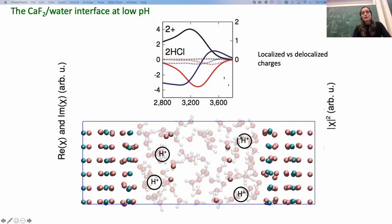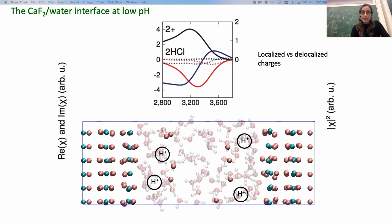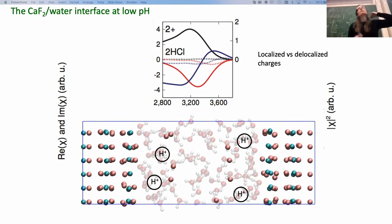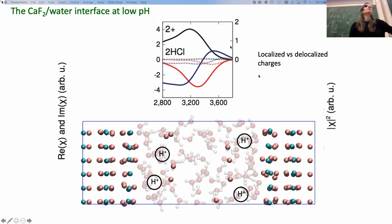This is quite an interesting effect, essentially due to the fact that in the case of localized charges, they can order the water. While if the proton diffuses, the local order is continuously changing and on average there is much less ordered water. We compared these results with experiments and found the best agreement is for localized charges. This is an example showing how localized and delocalized charges can have a very different impact on the spectra, and how simulation can help to rationalize what happens.